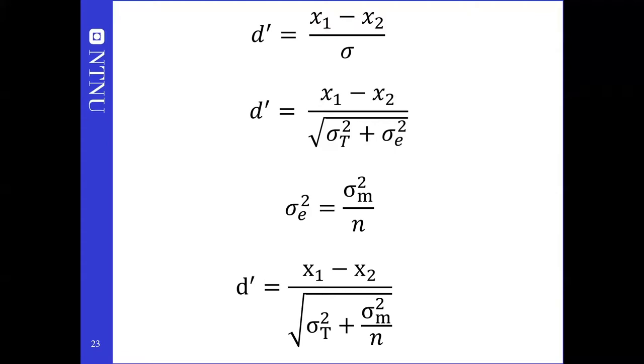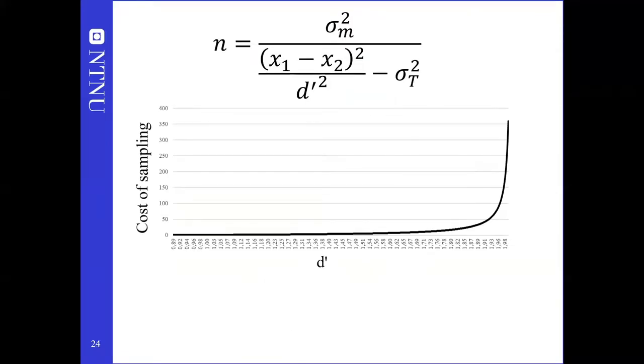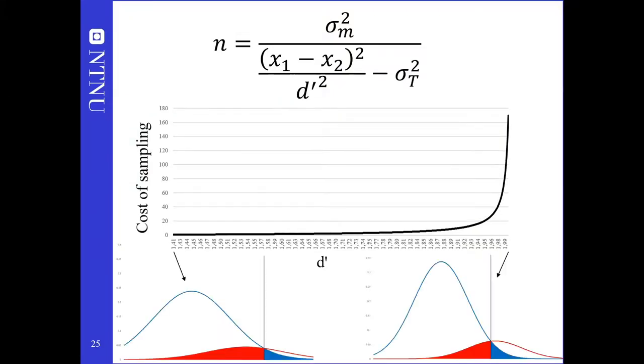Then, given our interest in the number of samples, we solve for N and get this. If we assume that each sample or each second of looking or listening or sniffing has the same cost, the total cost is proportional to the number of samples or the time invested. As d' approaches the maximum given the true variance, the extra number of samples needed for each increment to d' approaches infinity, and so does the cost. As sampling increases d', the total cost of errors shown here by the shaded area decreases because there are fewer of them, and the benefit of correct decisions increases because there are more of them. That must be balanced against the increasing cost of sampling. What is the optimum extent of sampling?